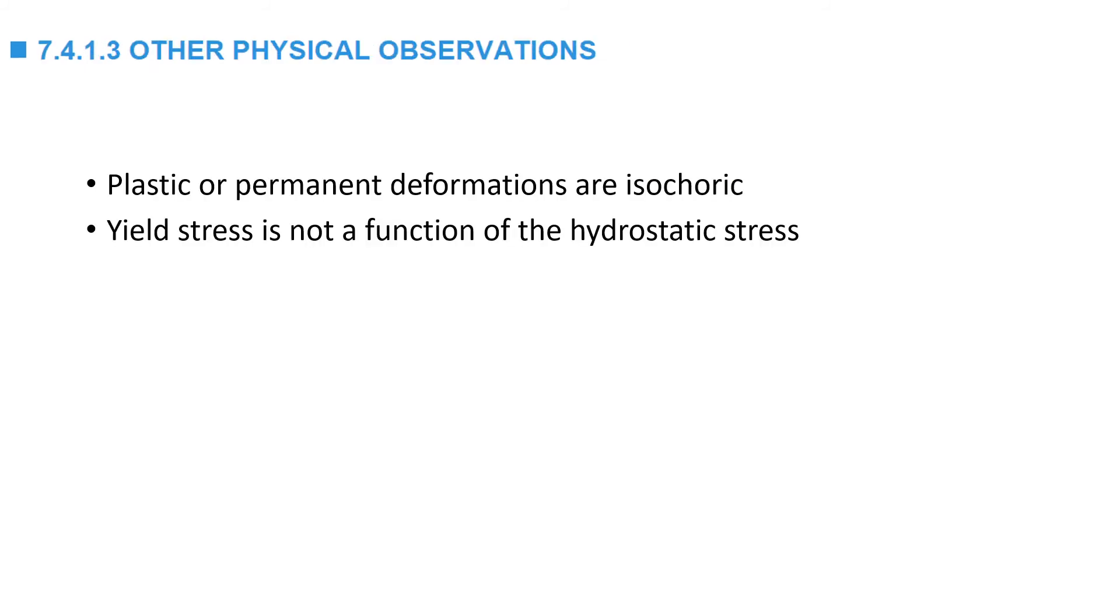Two other physical observations that are used to develop the plasticity model is that plastic deformations are isochoric. The volumetric plastic strain is equal to zero, which means locally the specimen deforms plastically while keeping its original volume. Another observation is that the plastic behavior does not occur under a state of hydrostatic stress. Yielding is a function of the differences in the principal stresses.